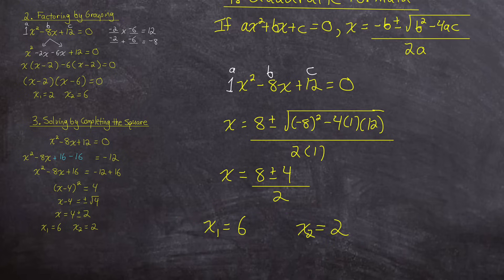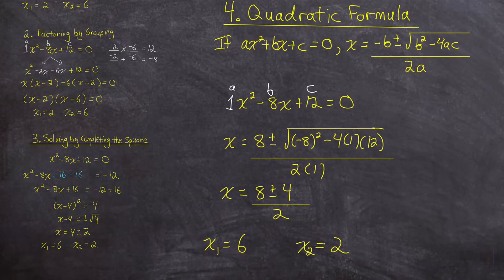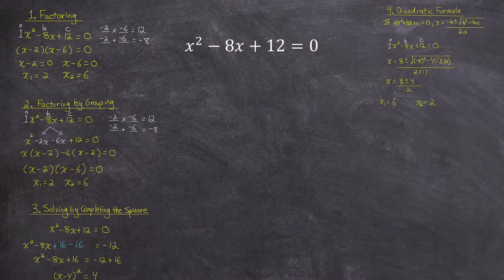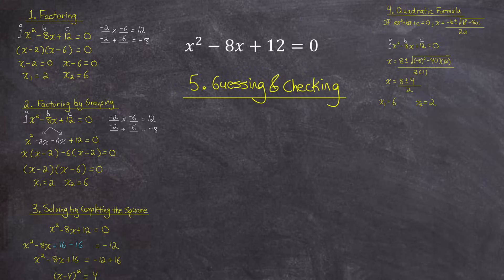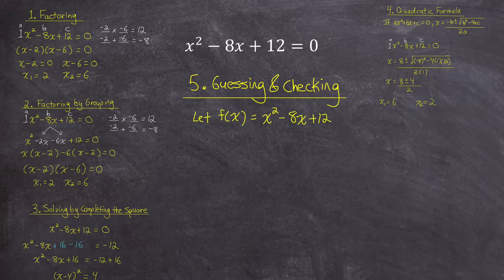Now that we've covered the most common methods, let's move on to some less common ones. Method number 5: let's solve this just by guessing and checking. If algebraically you weren't able to solve any type of equation, this is technically a valid method — it might take a long time, but you might get lucky. To solve by guessing and checking, let's call the quadratic on the left f of x, and start plugging in values for x to find some that make the quadratic equal 0.